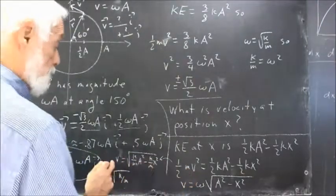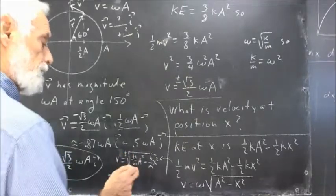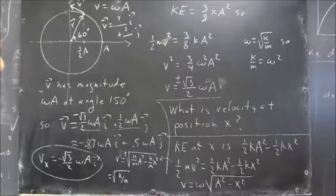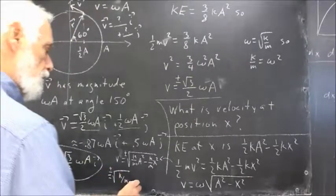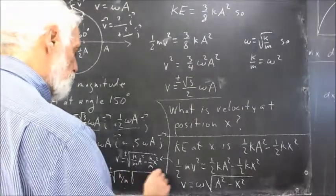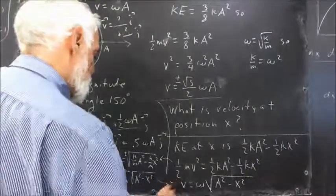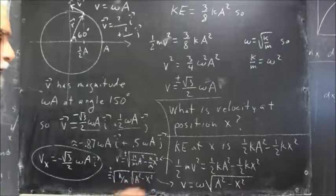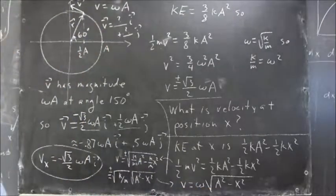So we get v, and it's going to be plus or minus this expression. Very simple rearrangement. And then we get plus or minus the square root of k over m times the square root of a squared minus x squared. Square root of k over m is omega, so we get v equals omega times the square root of a squared minus x squared.